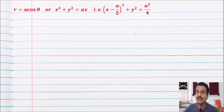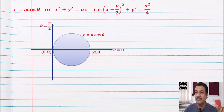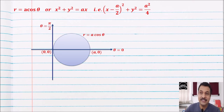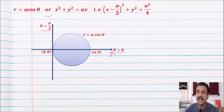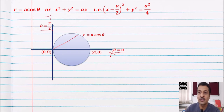You can see here: this is the x-axis and y-axis, and we get this circle. In polar form, θ = 0 is along the x-axis and θ = π/2 is along the y-axis. The radius vector goes from 0 to r = a cos θ.